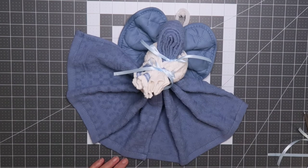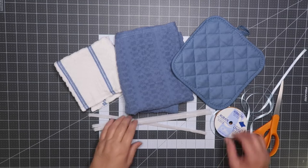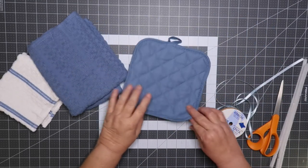Hi everybody and welcome to the channel. Today we're going to be making a kitchen angel. She's made out of a kitchen towel, a dish rag, and also a pot holder, so let's get started.